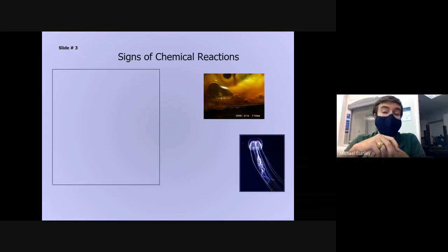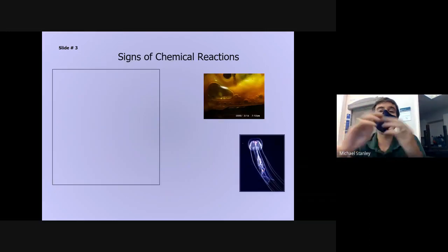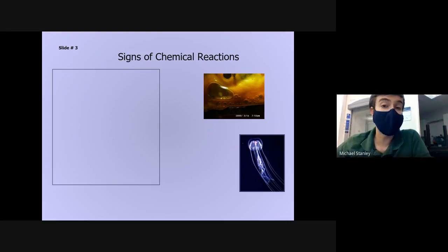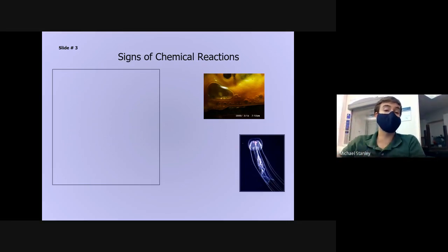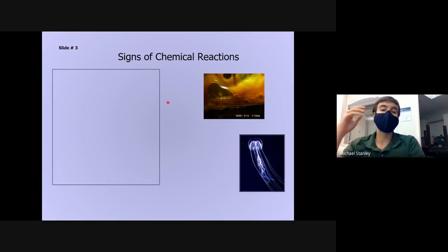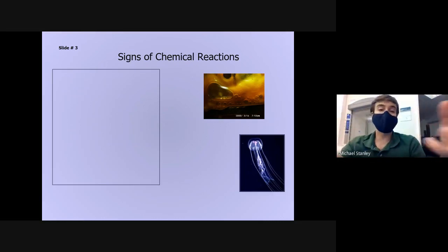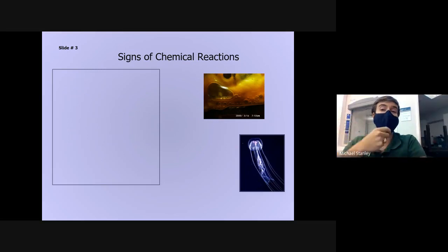When a chemical reaction is going on — when substances are interacting and creating something new — there's usually some way for us to tell. There are about six different signs that a chemical reaction could be happening. Some chemical reactions might only produce one of these, some might produce a whole lot, but there's usually some sort of indication that a chemical reaction is taking place.